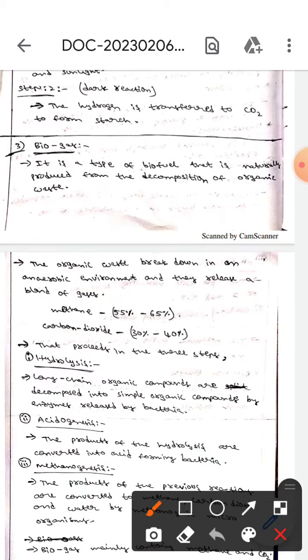The organic waste breakdown in an environment releases a blend of gases. In order to produce this biogas, we will decompose or break down the organic waste in an anaerobic environment, which means there will be no oxygen, and they release a blend of gases.